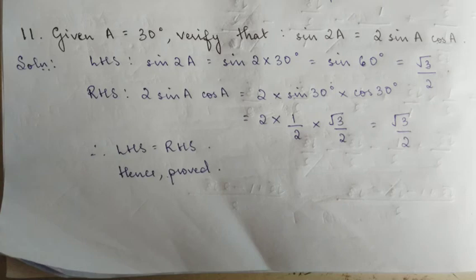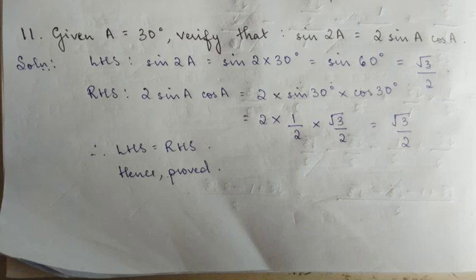Right hand side: 2 sinA cosA. So 2 into sin30 — sin30 equals 1 by 2. Multiply: 2 into 1 by 2 gives root 3 by 2. Therefore LHS is equal to RHS, hence proved.